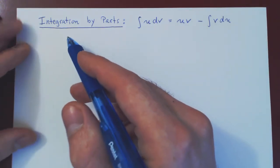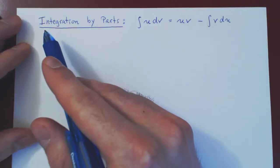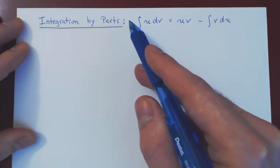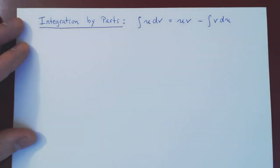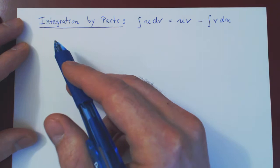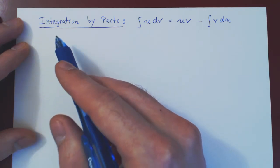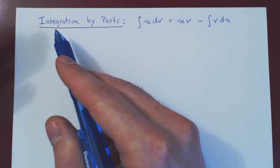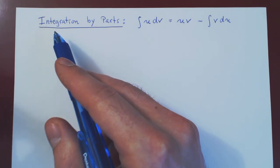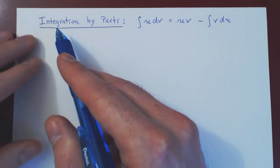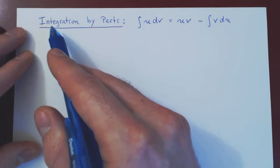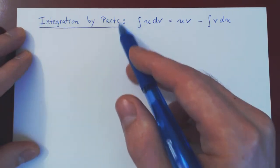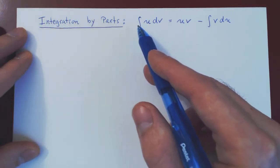In this video, we will introduce and derive the method of integration by parts. So far we have seen one technique of integration called u-substitution. But this method is not enough — there are integrals that cannot be solved with a u-substitution, so sometimes we have to use this method called integration by parts.